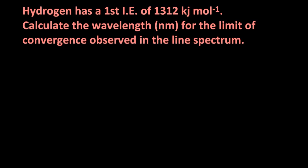Let's look at a question. Hydrogen has a first ionization energy of 1,312 kilojoules per mole. Calculate the wavelength in nanometers for the limit of convergence observed in the line spectrum. We know the answer is 91 nanometers — that's where the ultraviolet light converged in the previous animation.